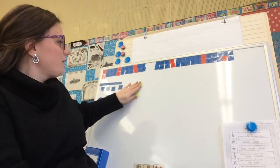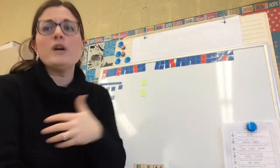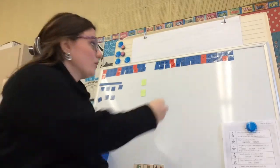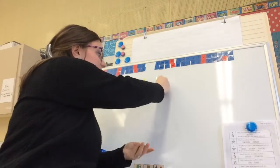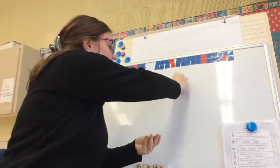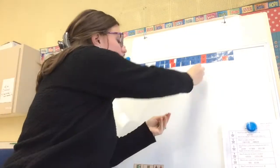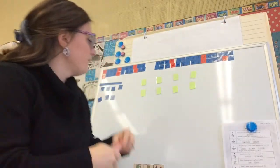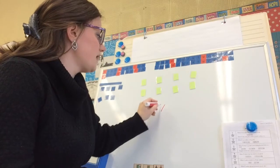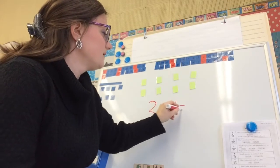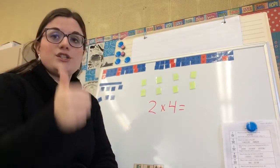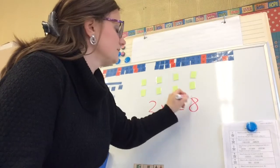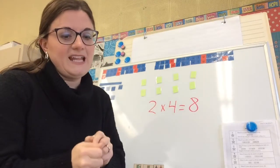So I have two counters here. And what if I want to multiply that by four? Well, that means I need to add some more groups. There's my second group. Here's my third group. And now here's my fourth group. So I can do now two times four. Two in each group times four groups equals, well, let's count by twos. Two, four, six, eight. So two times four is eight.